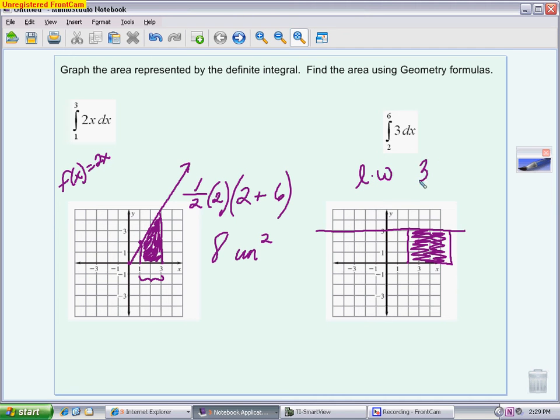So it's 3 times 4, giving me an area of 12 square units. Just looking at the different dimensions, I knew it was 4 because it went from 2 to 6, and I knew the height was 3 because it has a horizontal line of y equals 3.